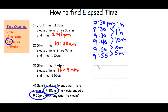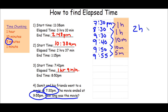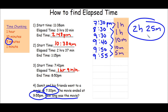To find out how long the movie was, we add up all the chunks: 1 hour, 2 hours, then 10 minutes, 20 minutes, plus 5 minutes gives me 25 minutes. So the elapsed time for this movie was 2 hours and 25 minutes. That is how you find elapsed time — thanks for watching!